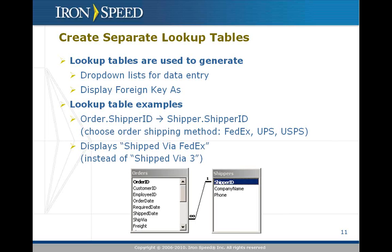Instead, it's better to create a separate lookup table with just a few entries — one for DHL, one for FedEx, one for UPS, and so forth. IronSpeed Designer automatically joins the orders table to the shippers table and will create the drop-down list for data entry, or will display the company name instead of the ID value on a display page — so it'll say "shipped via FedEx" as opposed to "shipped via 3."